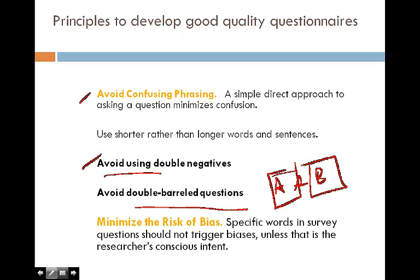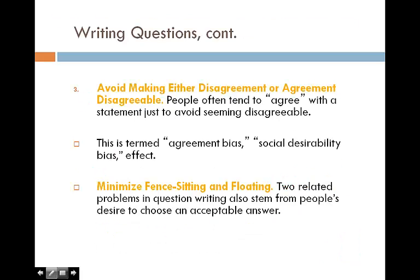Minimize the risk of bias. Sometimes specific words in survey questions can trigger biases — for example, asking 'Are you still using marijuana?' puts a particular meaning into the respondent's mind. We also need to avoid making either disagreement or agreement disagreeable. Questions like this are called social desirability questions. For example, asking 'Do you know the senators from California in the U.S. Senate?' — people will likely say yes to appear politically aware. Conversely, asking 'Do you steal batteries from Walmart?' has a very obvious expected answer. We need to be sensitive about this type of question.